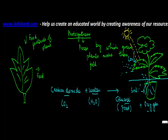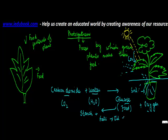Thereafter, this glucose basically gets converted into something which is called starch. And depending on which kind of plant it is, it may actually get converted into some kind of fats, oil, or other material.